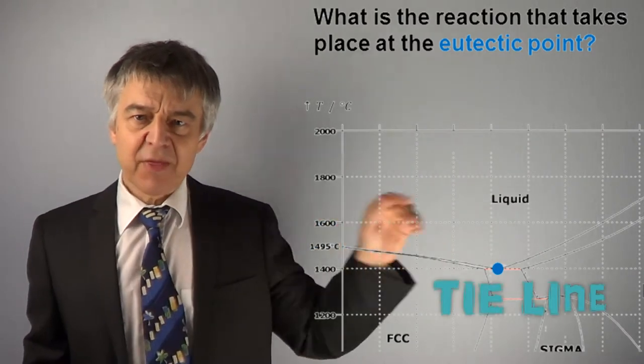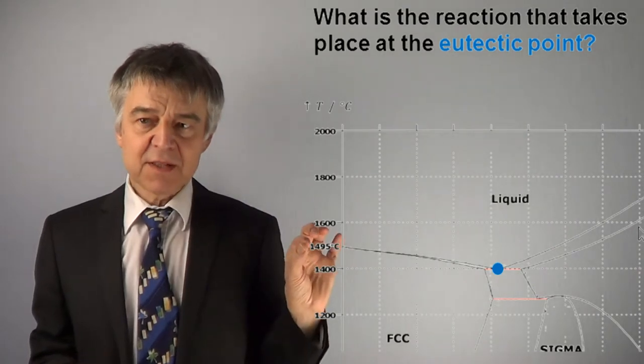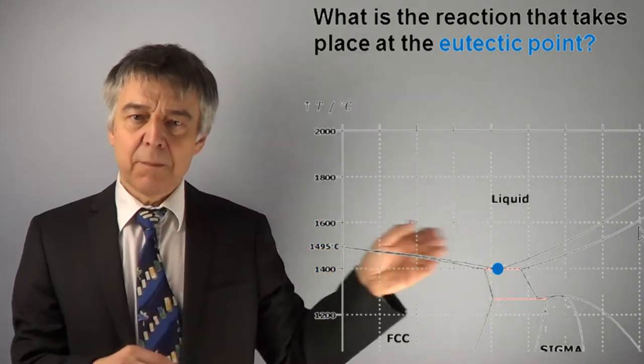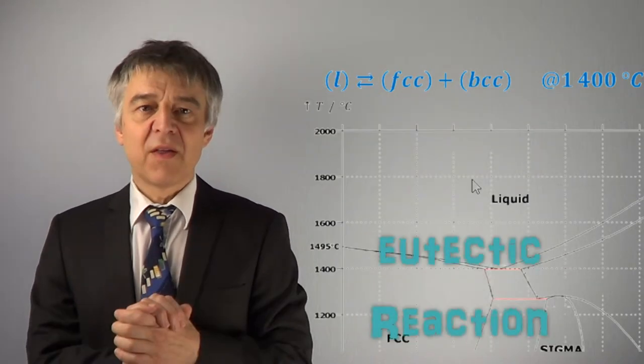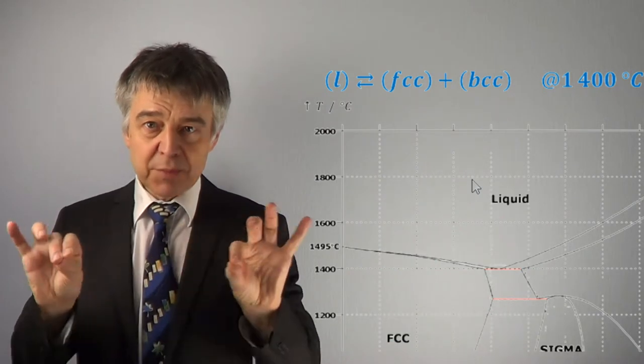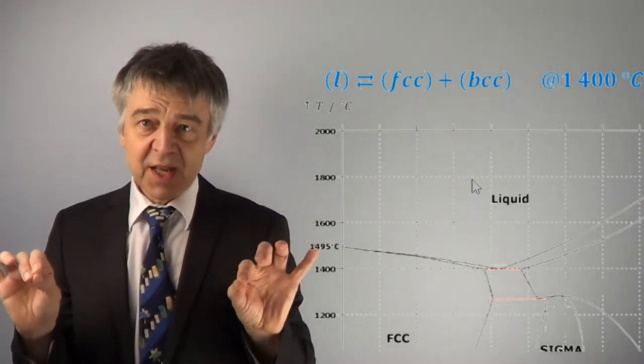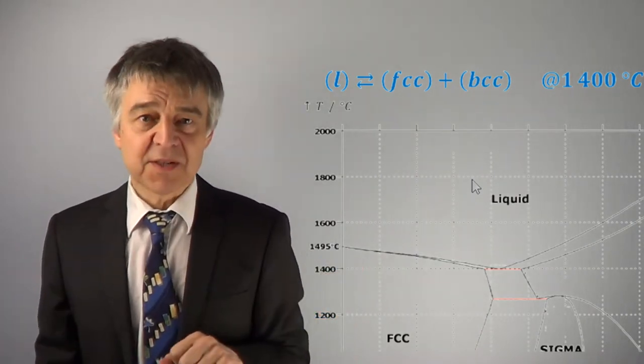The tie line through the eutectic connects the FCC phase to the BCC phase at 1400°C. The eutectic reaction is: melt decomposes at 1400°C into solid FCC and solid BCC.